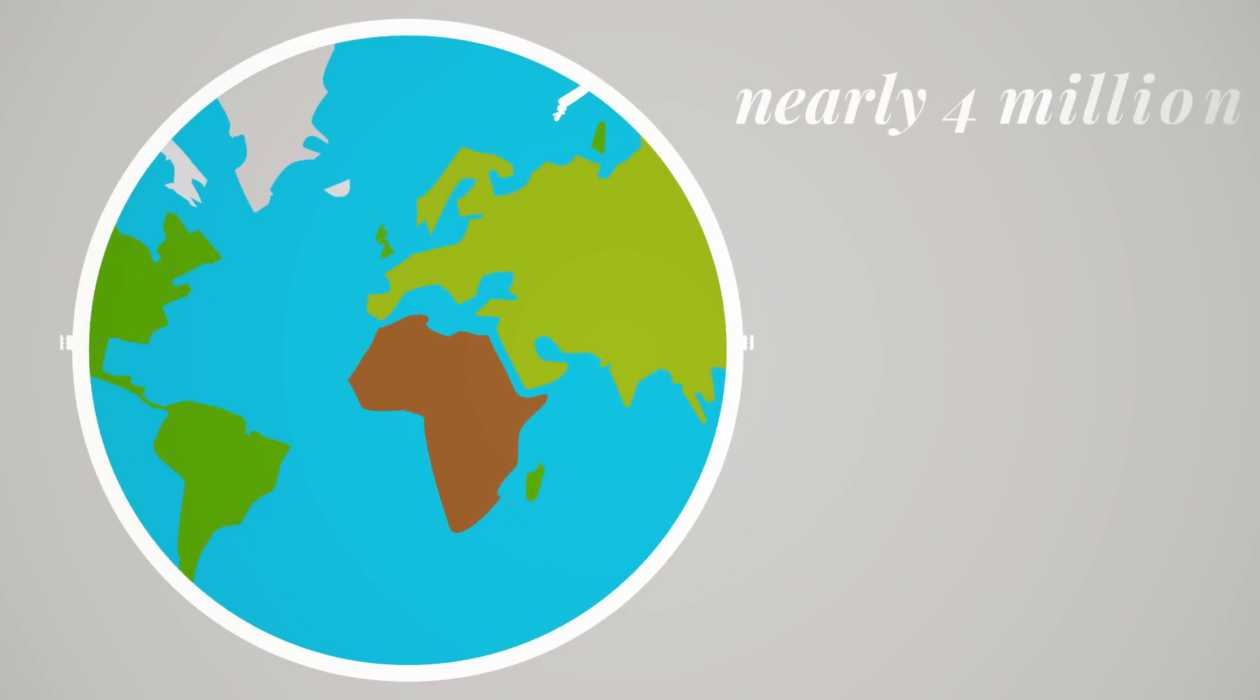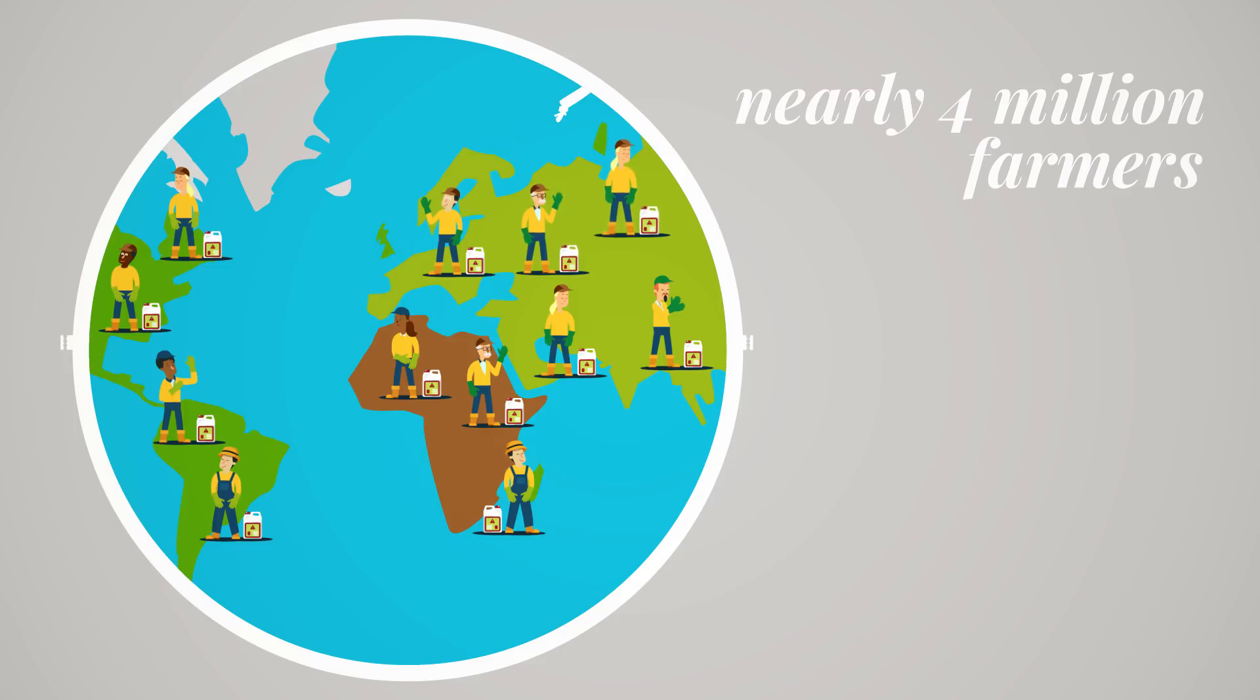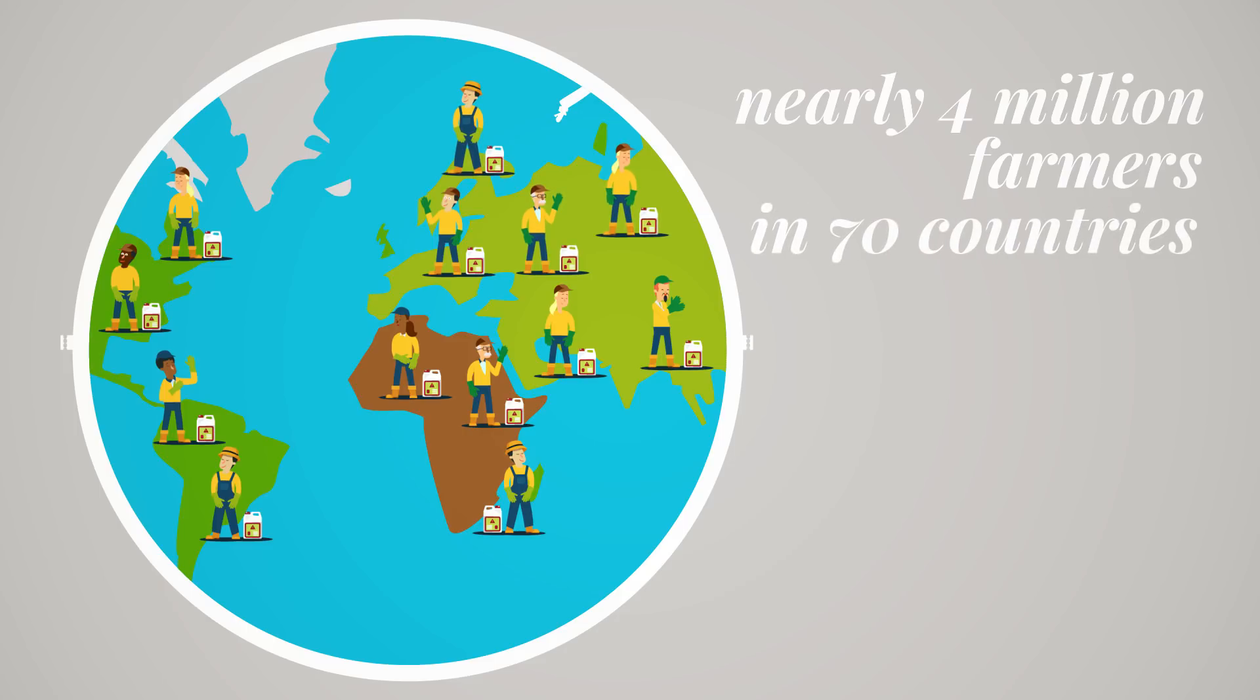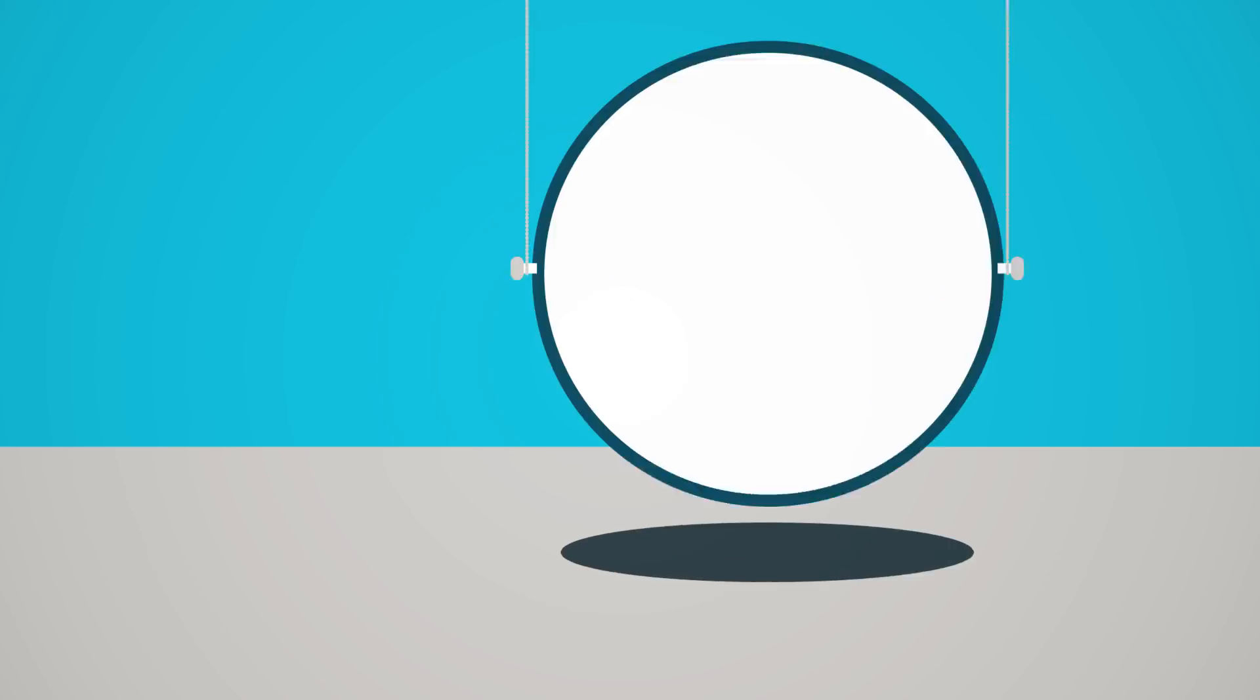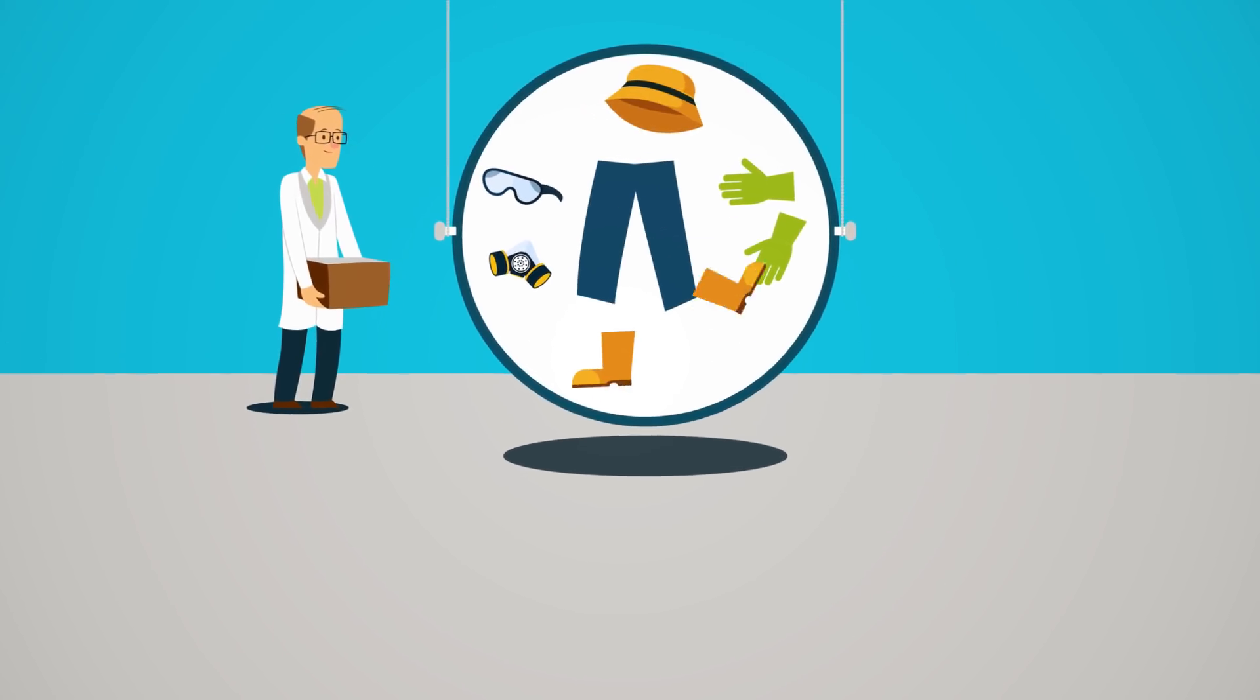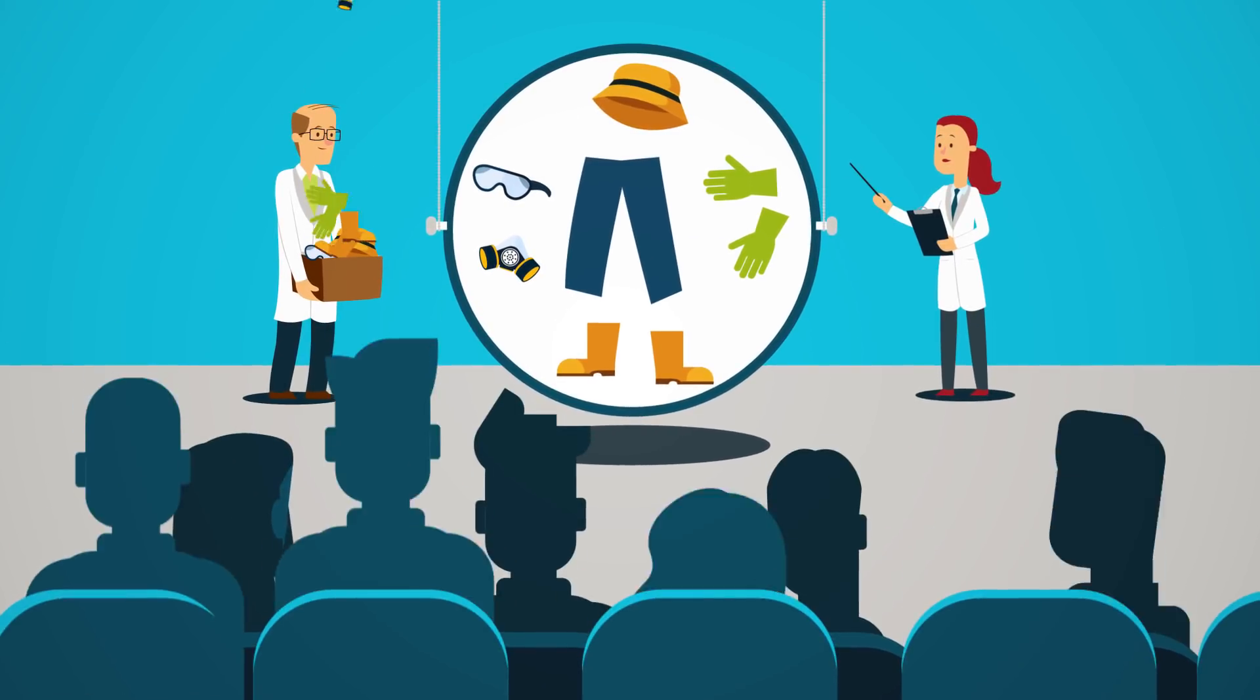In addition, nearly 4 million people in 70 countries have been trained in the responsible use of pesticides through CropLife International programs since 2005. Millions more farmers have been trained by CropLife member companies.